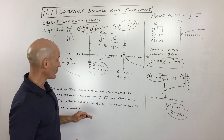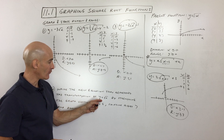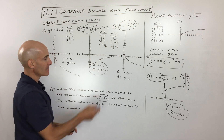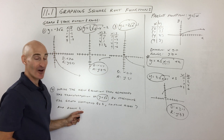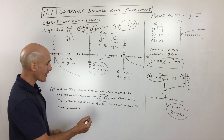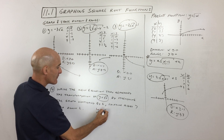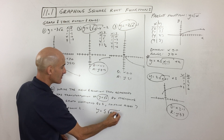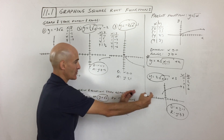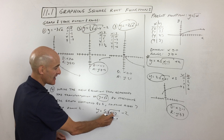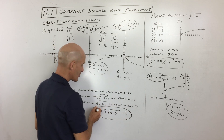Last problem — a word problem. Write the new equation representing the transformation of y equals square root of x by stretching the graph vertically by five, shifting right seven, and down two. The a value is five for the vertical stretch. Shifting right seven means x minus seven inside the square root — it has the opposite sign. Down two means minus two outside the square root — same effect as its sign. So the equation is y equals five times the square root of x minus seven, minus two.